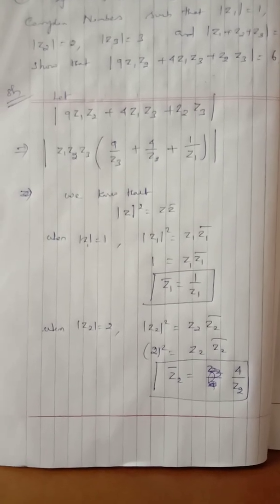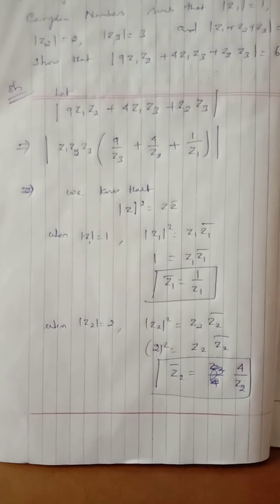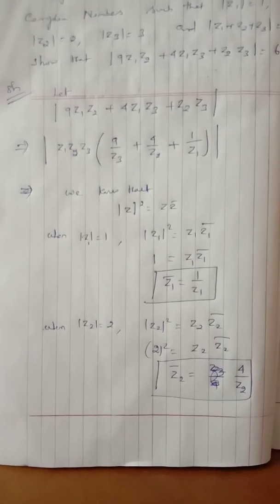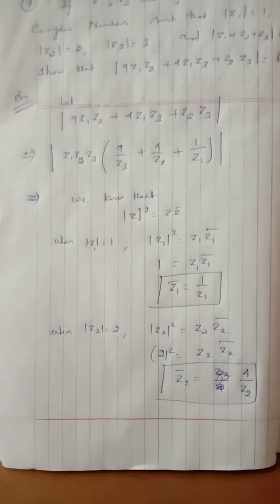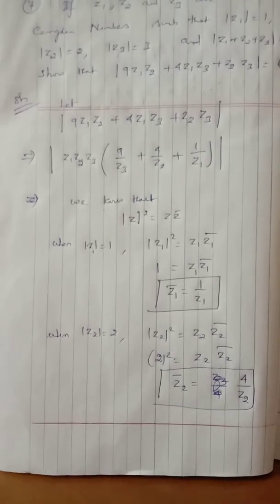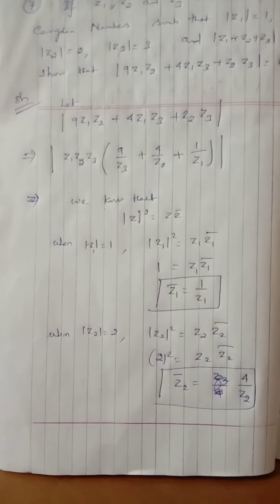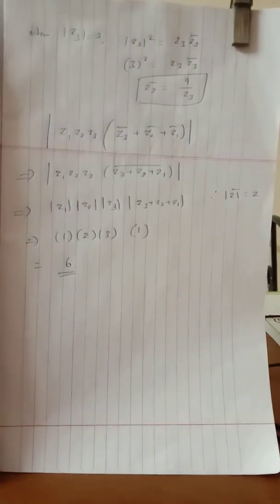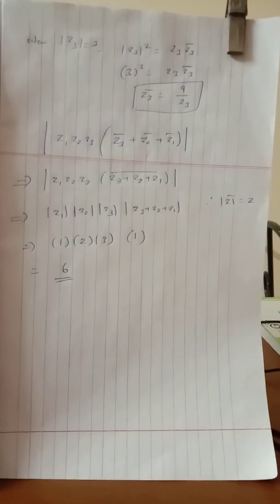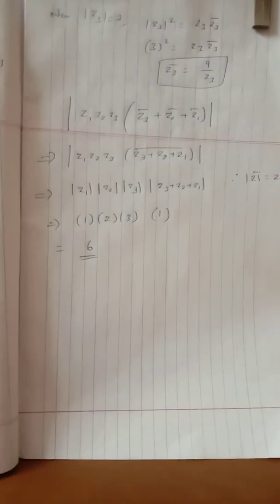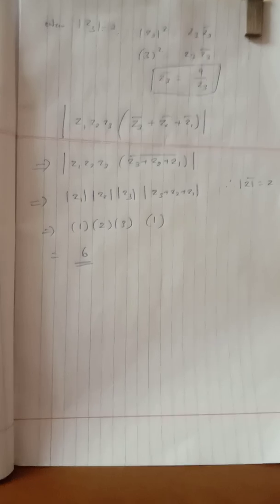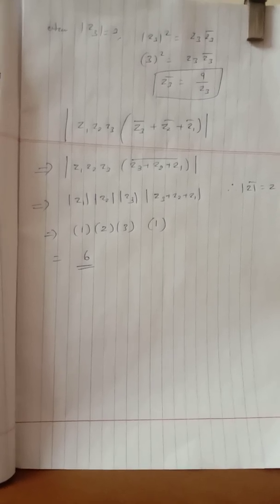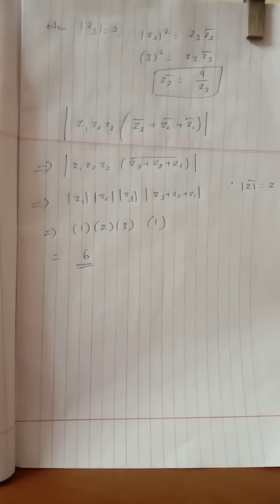Therefore: 9 by Z3 equals Z3 bar, 4 by Z2 equals Z2 bar, and 1 by Z1 equals Z1 bar.